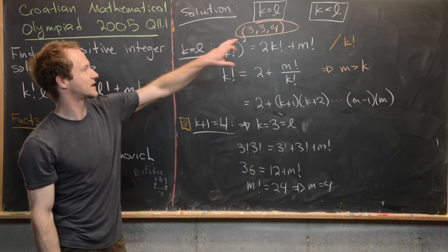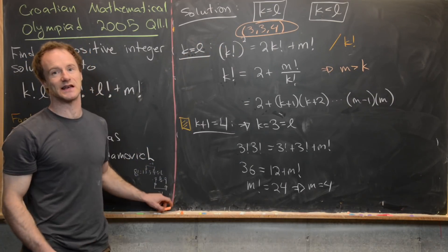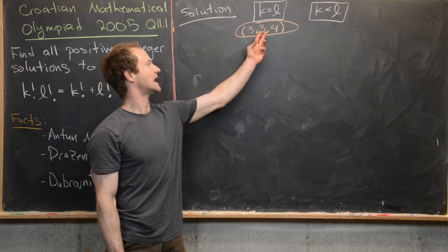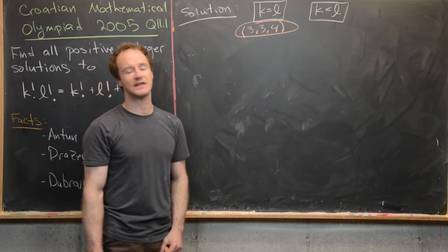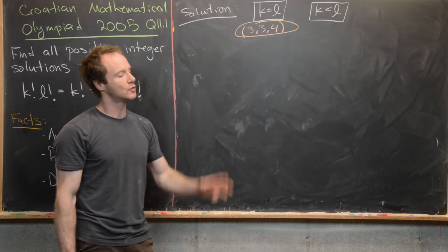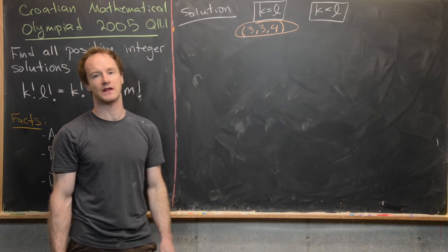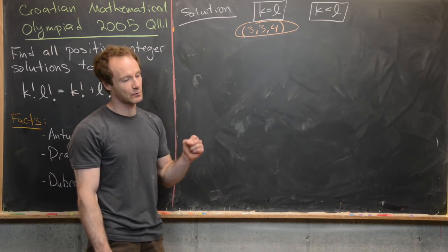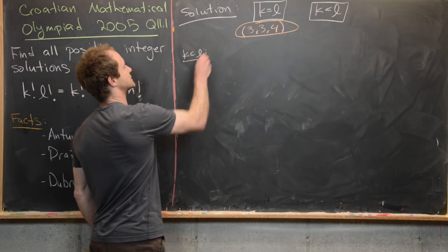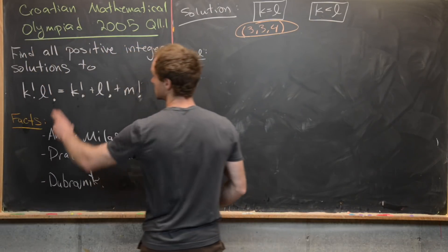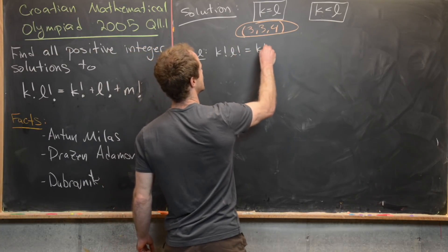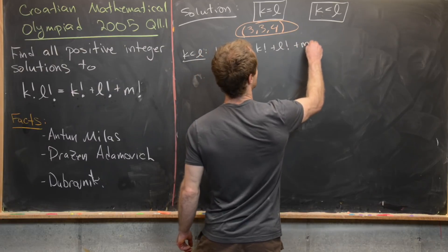We found a single solution (k, l, m) = (3, 3, 4) in the case k = l. Now let's consider the case k < l, which is symmetric to the case k > l — any solution here will have a symmetric counterpart. We rewrite the equation: k! · l! = k! + l! + m!.